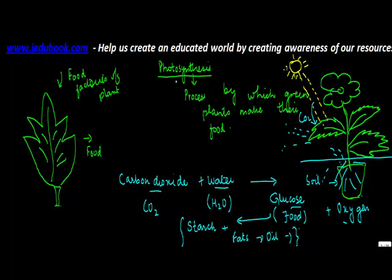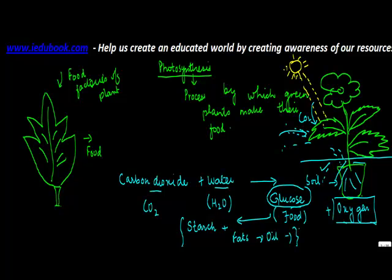So photosynthesis refers to this process wherein the plant takes carbon dioxide from the air, water from the soil, and by using sunlight prepares its food in the form of glucose. It also releases oxygen into the environment, which is very essential for us, because the oxygen that we breathe in is released through the process of photosynthesis.